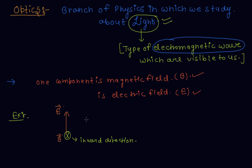So basically, these two components oscillate in a perpendicular direction to their own direction. If this is the electric field direction, then it oscillates in a perpendicular direction. And in the same manner, if magnetic field is inward to the plane of paper, then it also oscillates about its perpendicular direction. Then the electromagnetic wave travels with velocity V towards the X-axis.